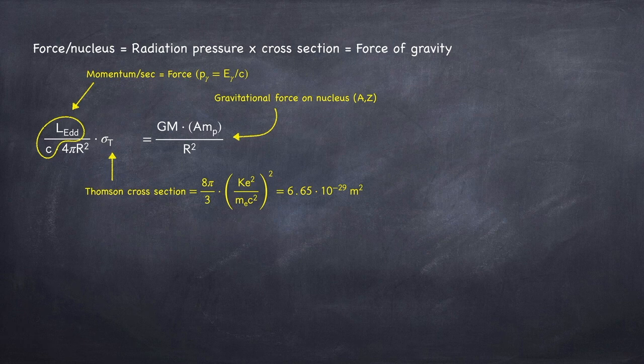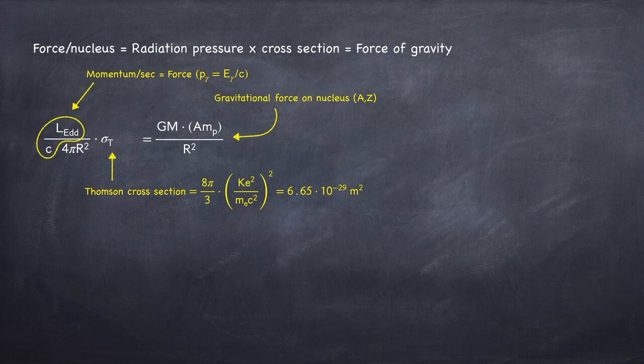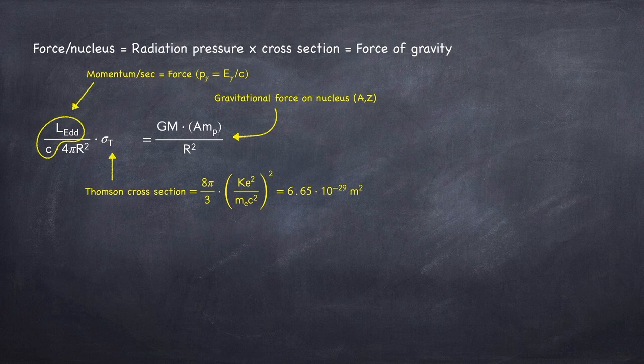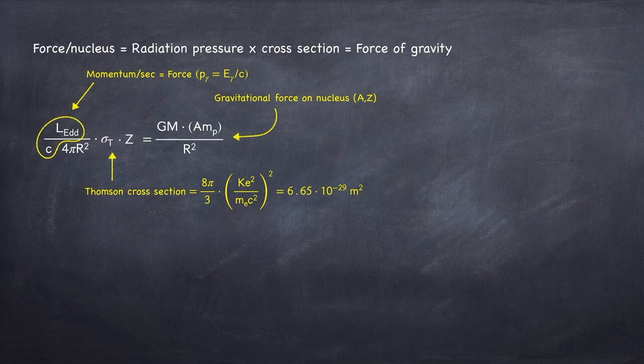Now, I mentioned that the nucleus has a charge Z. This is important, because since the star is electrically neutral, there are as many protons as there are electrons. Z will tell you the number of electrons per nucleus. If this radiation force is being transferred to a nucleus via an electron, it matters how many electrons there are per nucleus. So we have to multiply by a factor of Z. We can now cancel the R's and solve for the luminosity.